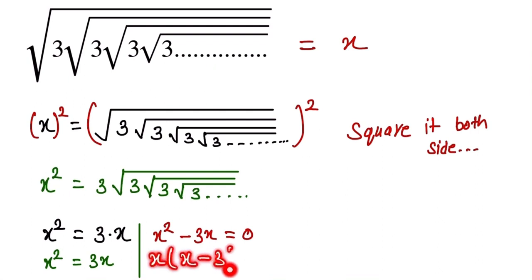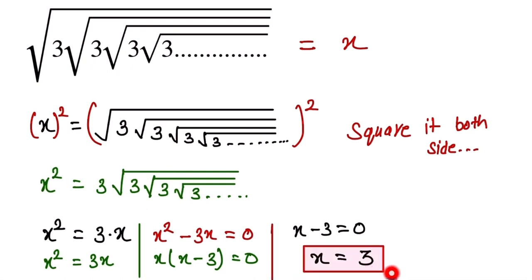So here is x(x - 3) equal to 0. So x minus 3 is equal to 0, so x is equal to 3. And this one is our final answer, so the answer of this equation is equal to 3.